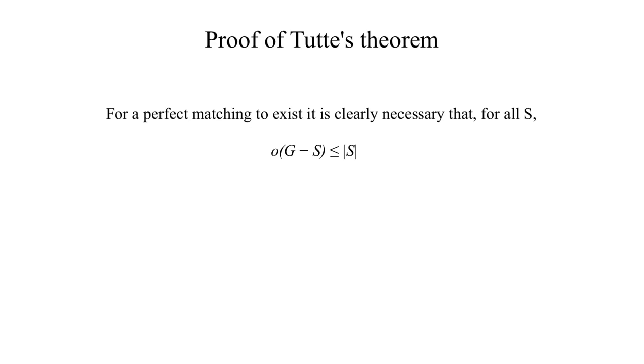For a perfect matching to exist, it is clearly necessary that Tutte's condition holds. That is, for every subset S of V, the number of odd components of G minus S is at most the number of elements of S.